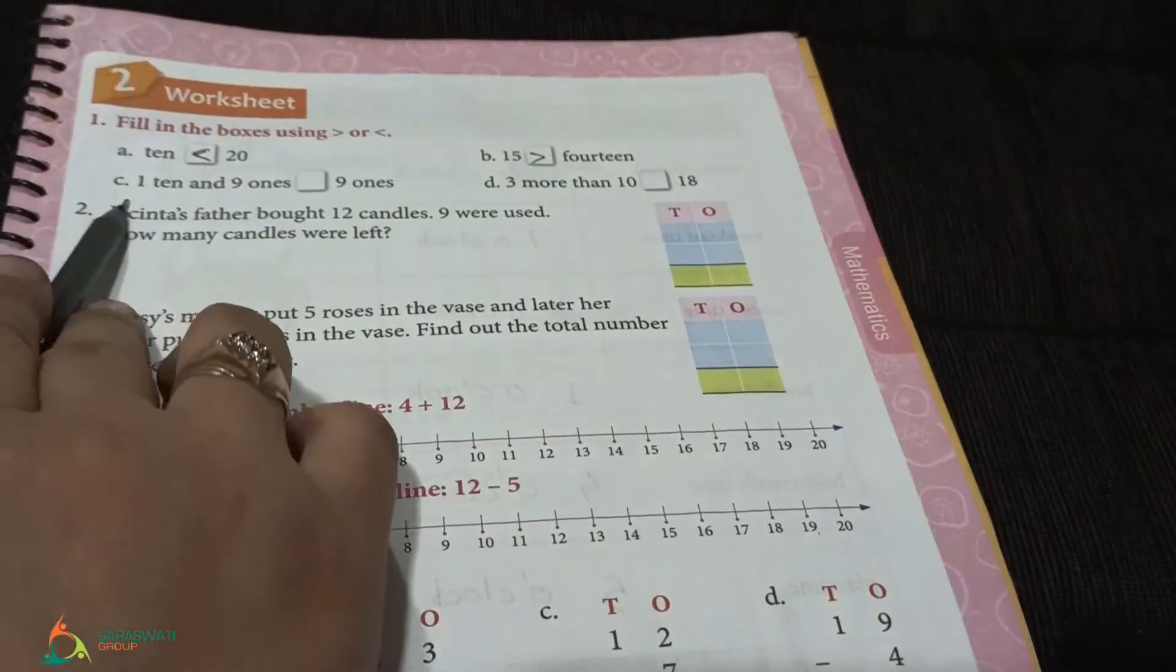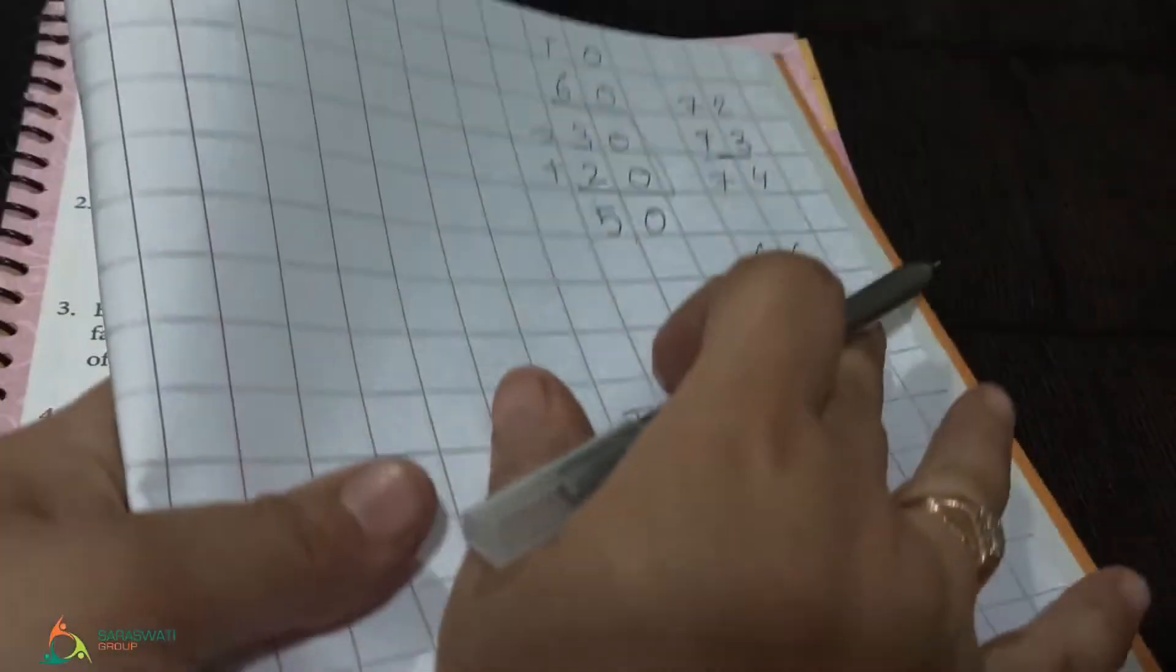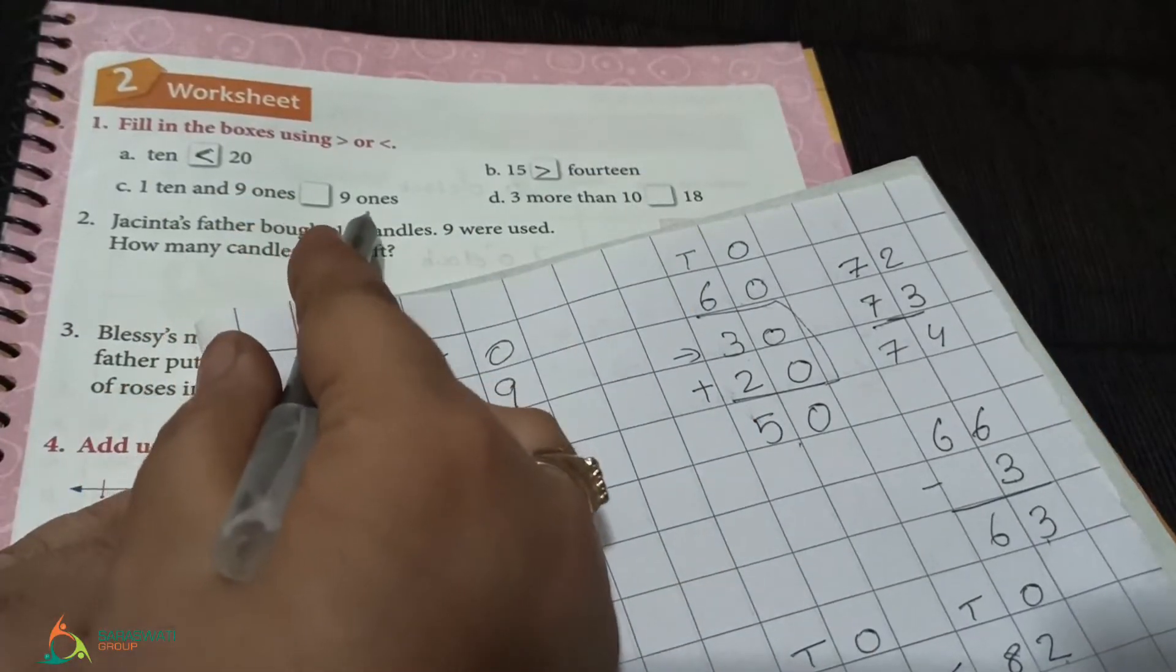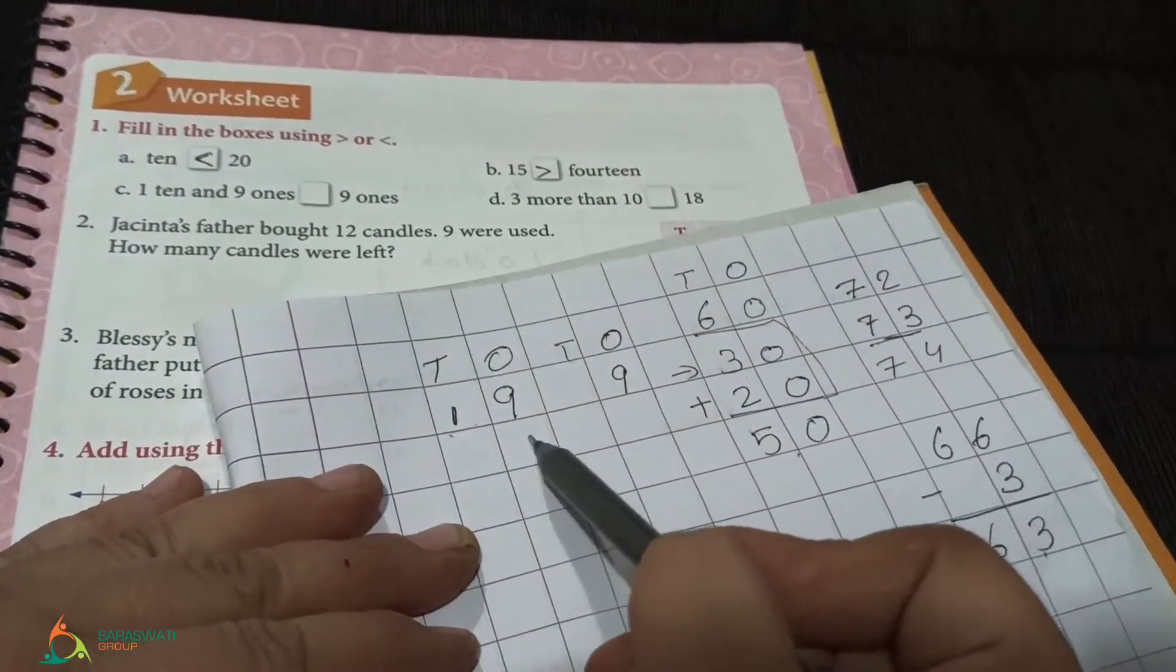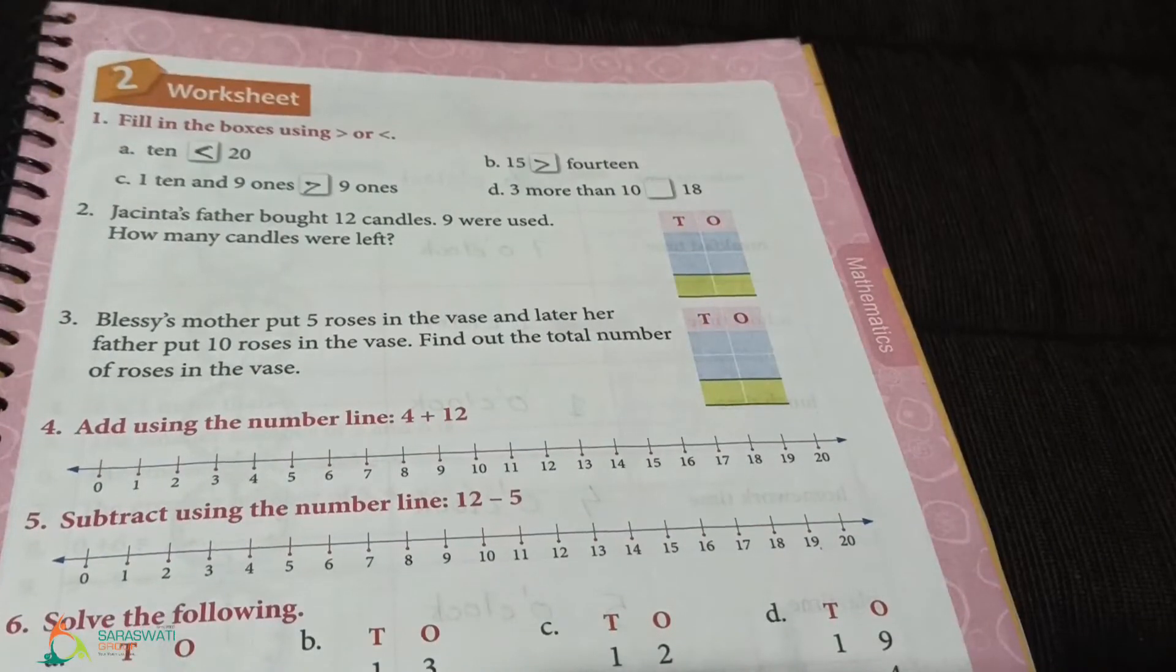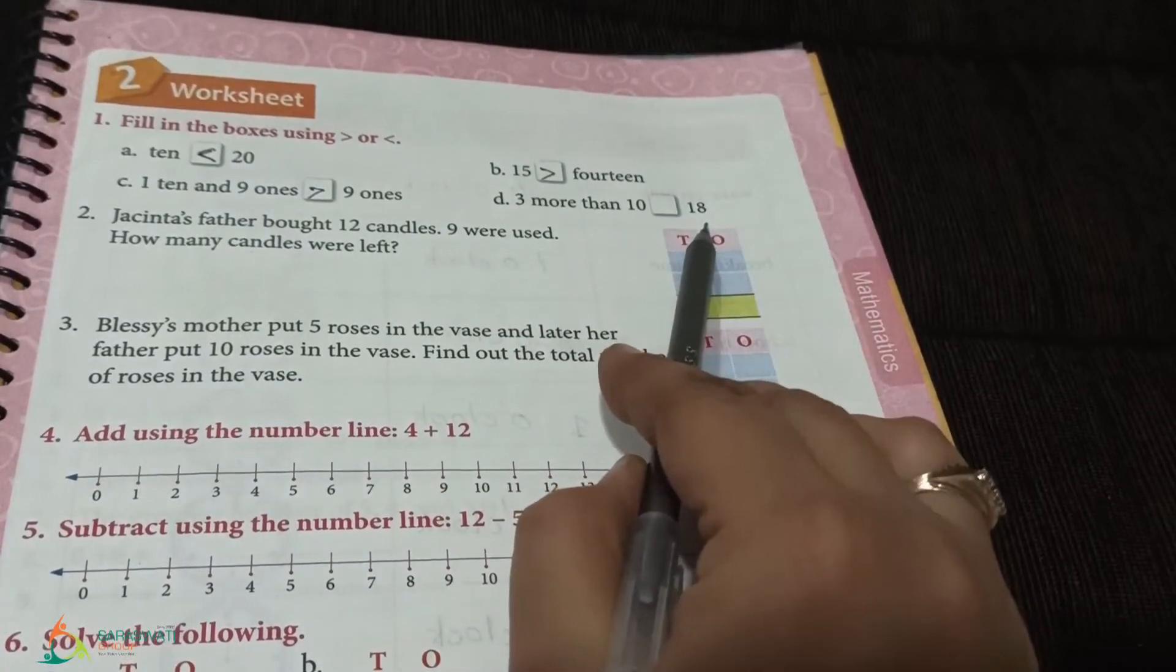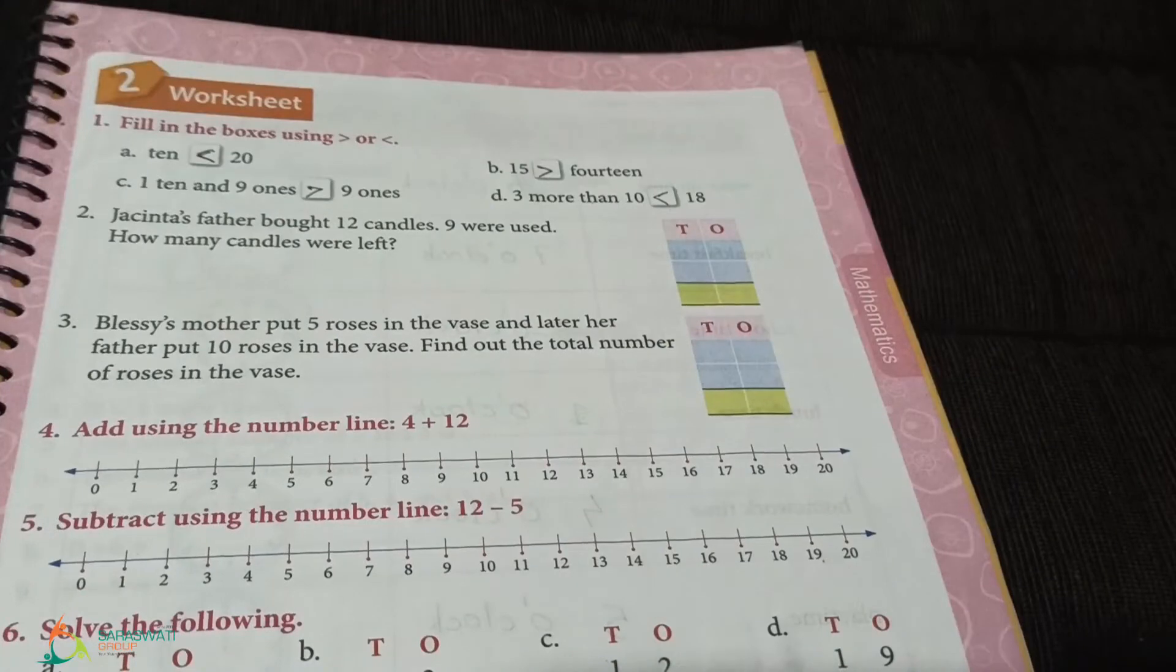Third is 1 ten and 9 ones. What is 1 ten and 9 ones? See, 1 ten means 1 and 9 ones means 9, so this number is 19. Is it greater than 9 ones? Only 9 ones, so 9. 19 is greater than 9, so we will put the greater than sign. Similarly, 3 more than 10 - what is 3 more than 10? 11, 12 and 13. So 13 is less than 18. We will put the sign of less than.